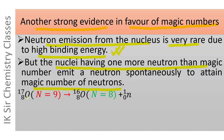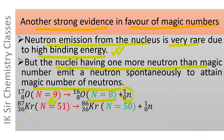Oxygen-17 contains 17−8 = 9 neutrons; 9 is one greater than the magic number 8. It contains one neutron more than the magic number and hence emits one neutron spontaneously, forming O-16, which contains 8 — the magic number of neutrons. Krypton-87 contains 87−36 = 51 neutrons; 51 is one more than the magic number 50. Hence krypton-87 emits one neutron spontaneously, forming krypton-86, which contains 50 — the magic number of neutrons.